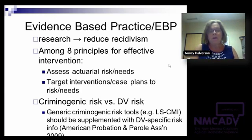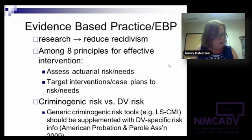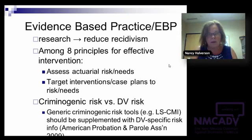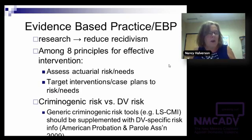The American Probation and Parole Association came out with a manual in 2009. One of their 41 guidelines of practice is that if you're going to use those generic criminogenic risk tools, you've got to supplement with DV-specific risk assessment in order to make sure you actually capture the people who are high risk for DV.